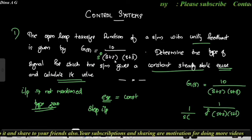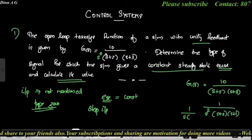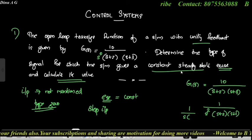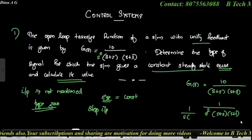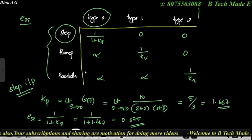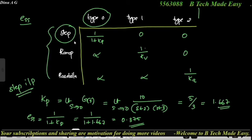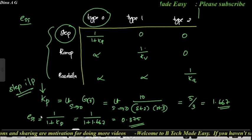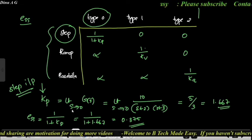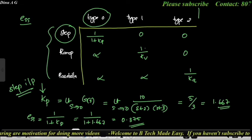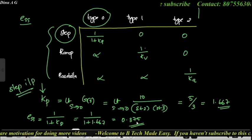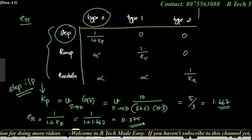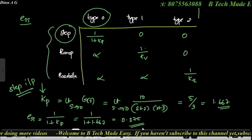You can find out any input type this way. ESS = 1/(1 + Kp); substitute the Kp value and we get ESS = 0.375.